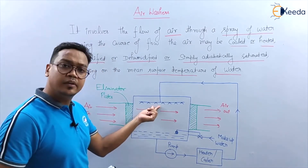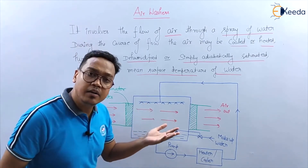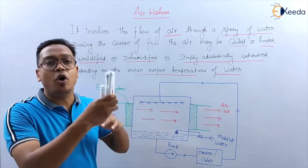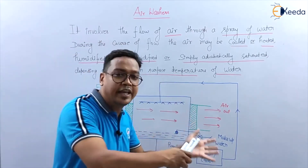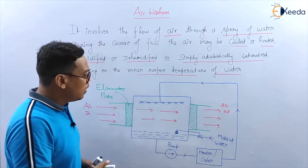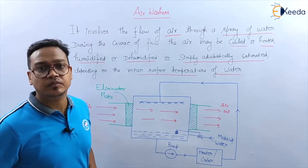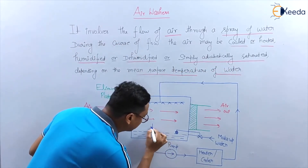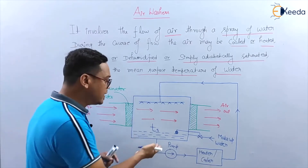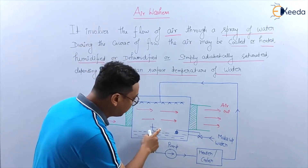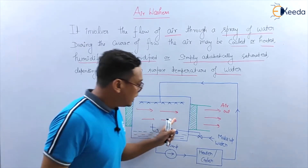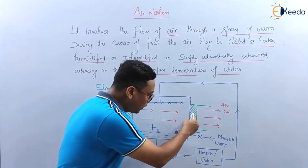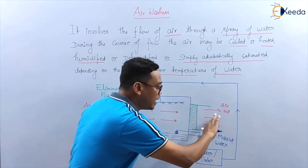This water may heat the air, humidify the air, cool the air, or dehumidify the air — or a combination of processes like cooling, humidification, heating, and dehumidification. All these processes we achieve with the air washer, and it depends on the mean surface temperature of water. The eliminator plates will remove the water droplets and the air will go out.